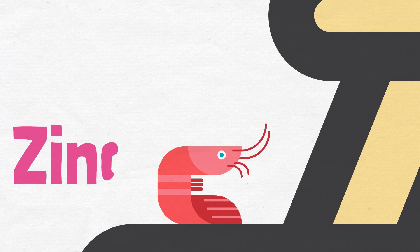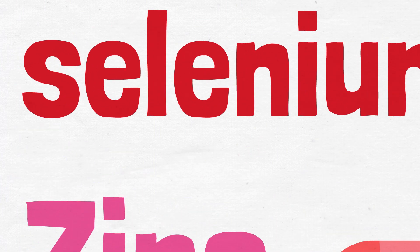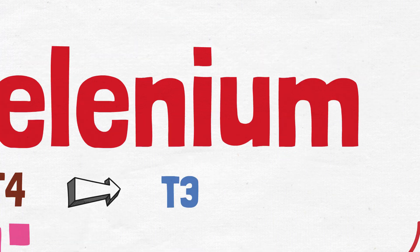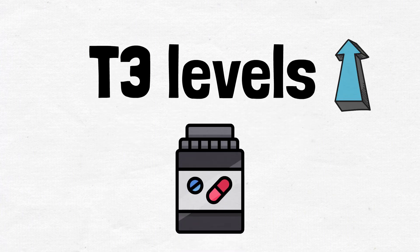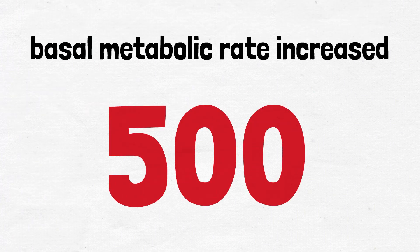In addition to iodine, zinc and selenium are also necessary for proper thyroid functioning. They play a role in the conversion of T4 to T3, the active form of thyroid hormone. Studies have shown that T3 levels increase in zinc-deficient individuals after supplementing, and the basal metabolic rate increases by up to 500 calories.